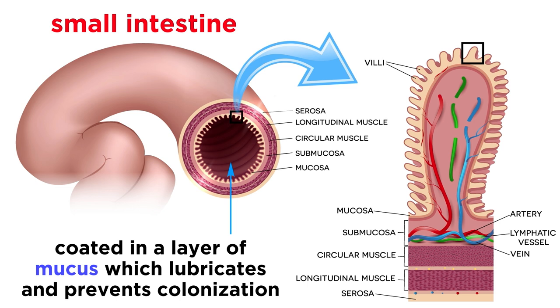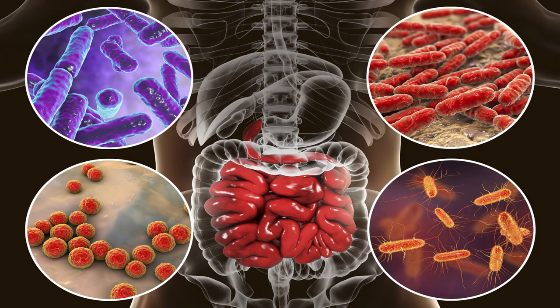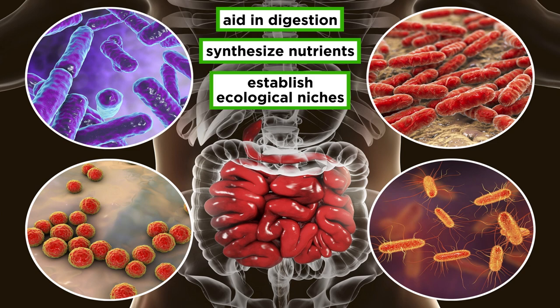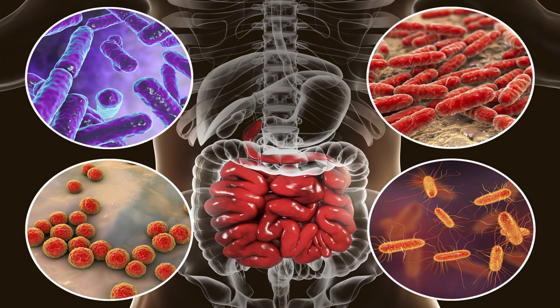The intestinal epithelium is coated in a layer of mucus, which helps lubricate surfaces and makes attachment and colonization more difficult. The mucus layer, generated by specialized epithelial cells called goblet cells, is also a source of nutrition for many gut commensals. The intestinal microbiome is probably the best characterized of all the human microbiomes. Gut microbes play many beneficial roles, including helping to digest complex carbohydrates, synthesizing nutrients like bile acids and some vitamins, and establishing ecological niches that help prevent the colonization of pathogens. Although the body maintains tolerance towards symbiotic bacteria, these bacteria are important for priming the developing mucosal immune system and helping it to function properly during infection with true pathogens.